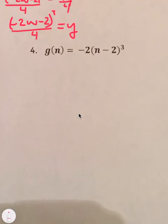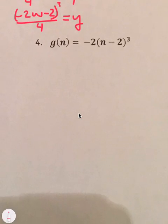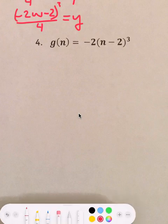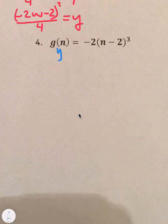And then, one more. Just trying to give you a bunch of options. And, most likely, the homework or problems you will do will be simpler than these ones. g of n equals negative 2 times n minus 2 cubed. I'm still going to use y. So, y equals negative 2 times n minus 2 cubed.